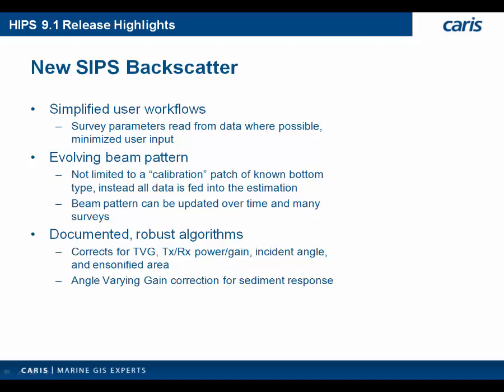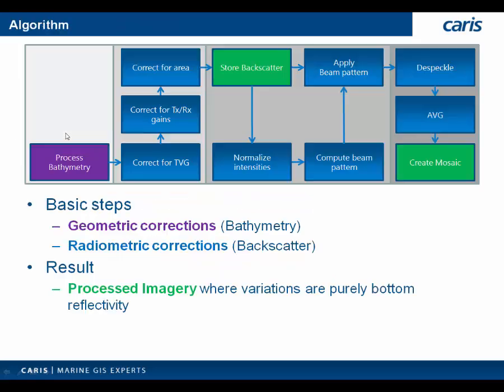The beam pattern is easy to manage as well — it can update every time you need to add data to the mosaic, even over multiple surveys. Another benefit of Sips backscatter is fully documented algorithms; we know exactly what it's doing and that information is also available to our users. This is an overview of what happens under the hood in Sips backscatter. We'll talk about each step in detail and how we apply our radiometric corrections to get processed imagery into a mosaic.